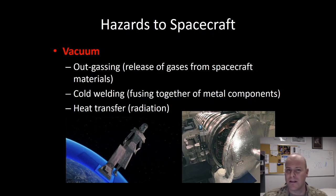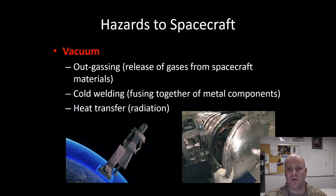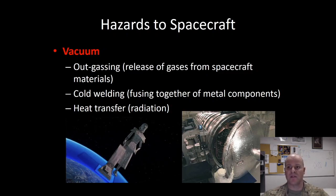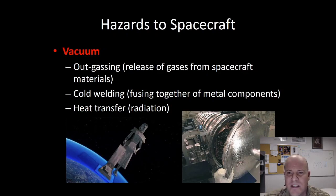Cold welding is another really interesting phenomenon that only occurs in space. Cold welding occurs when mechanical parts that have very little separation between them get up into space. The pocket of air disappears due to the vacuum of space and essentially causes the parts to fuse or weld together. For this reason, satellite designers try to avoid using moving parts where they can.